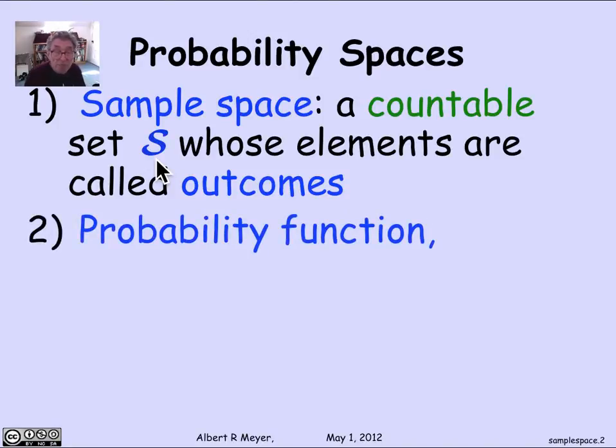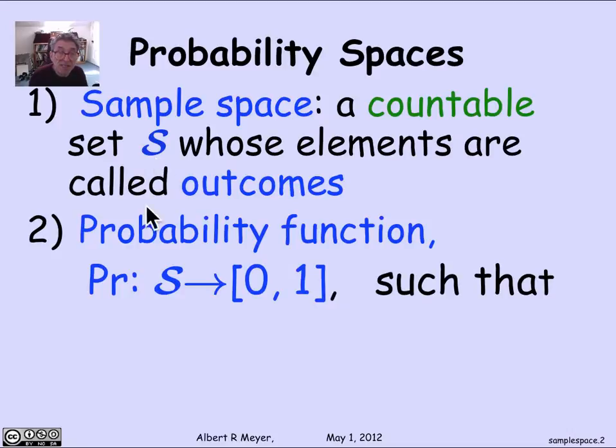The next thing is a probability function whose task is to assign probabilities to the outcomes. The probability function Pr gives every element in S, every outcome, a probability between 0 and 1 inclusive. So every outcome gets a probability between 0 and 1.